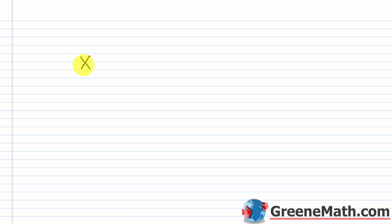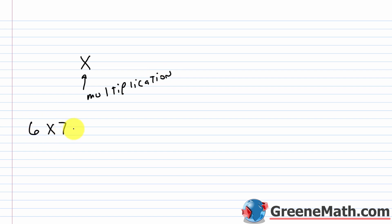I want to make you aware of a little notational change that's going to start in this video. For a lot of you who haven't taken algebra yet, you've only used the × symbol to imply multiplication. So if I wanted something like 6 times 7, I write 6, then that symbol, then 7, and we know that equals 42.